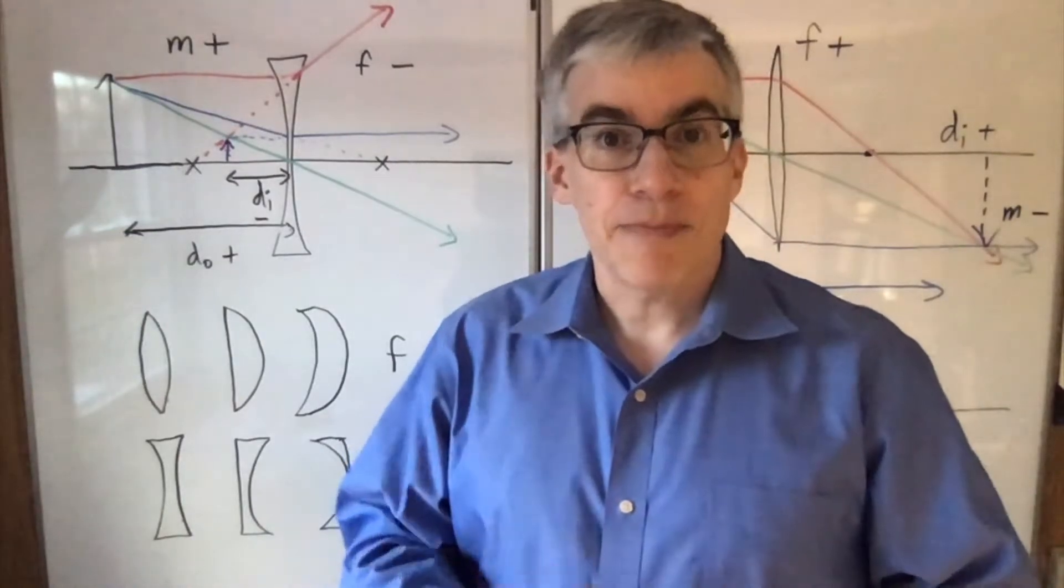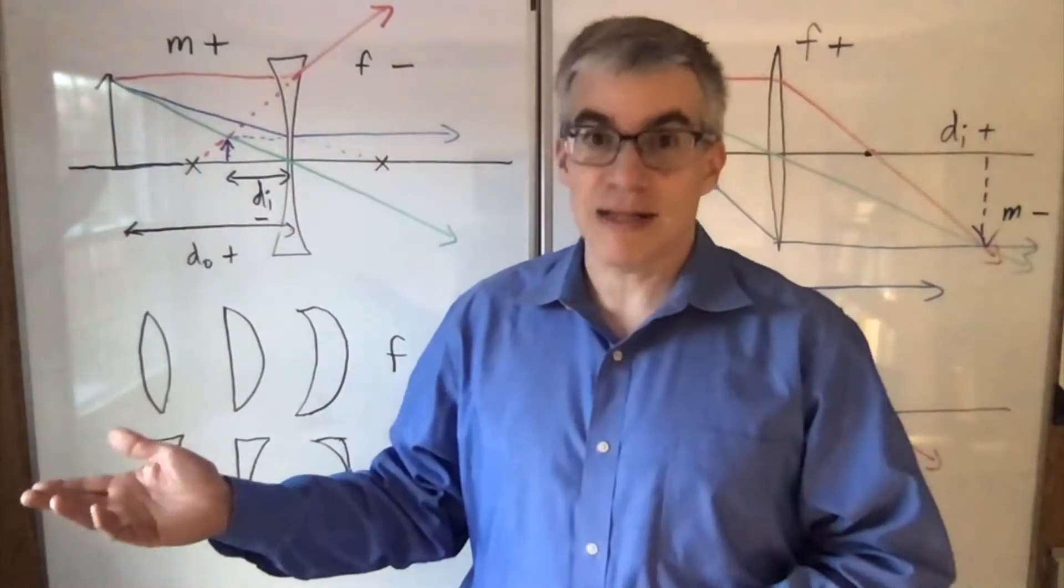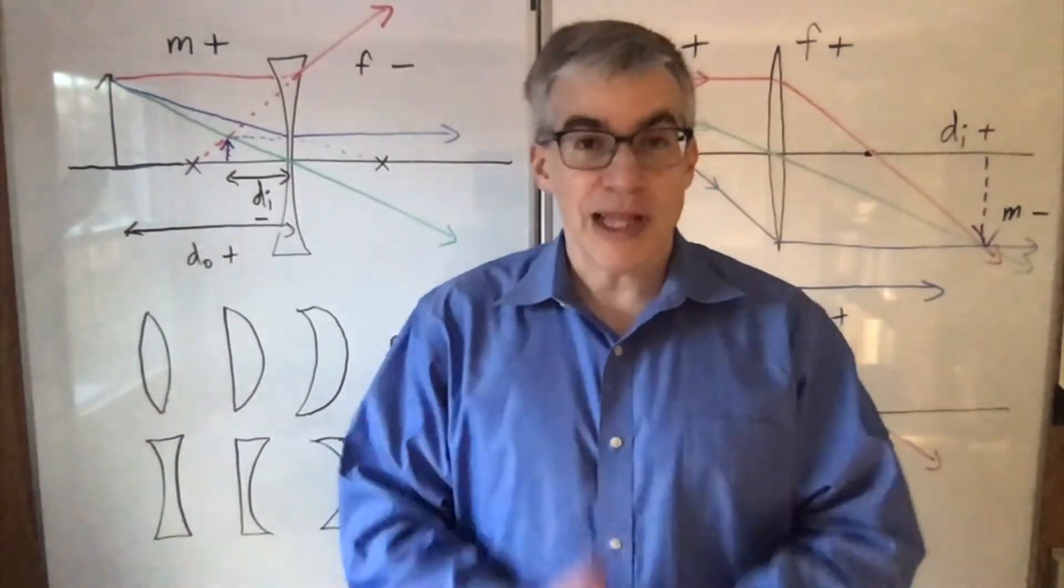What about DO and DI? It's a little different from mirrors, because for mirrors, the light bounces back, and that's the natural thing for it to do. For a lens, the light goes straight through.